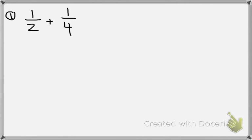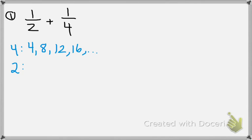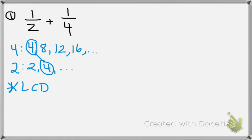I always say you should start with the larger number first. We have 4 and 2, so let's do the multiples of 4: 4 times 1 is 4, 4 times 2 is 8, 12, 16... This one is pretty simple and you could have done it in your head, but I'm showing you just in case for the other ones. For 2: 2 times 1 is 2, 2 times 2 is 4. Both 2 and 4 have a multiple of 4. That is the least common multiple — it is the least value. So LCD equals 4.